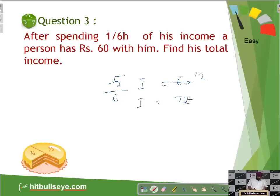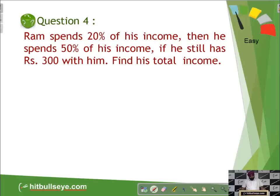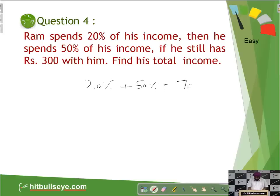Ron spends 20% of his income, then he spends 50% of the remaining. If he still has Rs. 300 with him, find the total income. 20% and 50% add up to 70%. If someone spends 70% of his income, what is left is 30%. So 30% of income equals Rs. 300, which gives income as Rs. 1000.